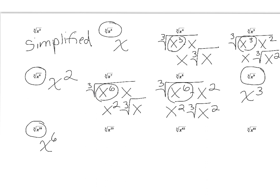So if you take a look, all the ones that are not divisible by three — you're either leaving one x on the inside, or you're leaving an x squared on the inside. Stop the video and see if you can try the last three. For the cube root of x to the 25th, break it into the cube root of x to the 24th times x. The exponent 24 is divisible by three, so you get x to the eighth, cube root of x.